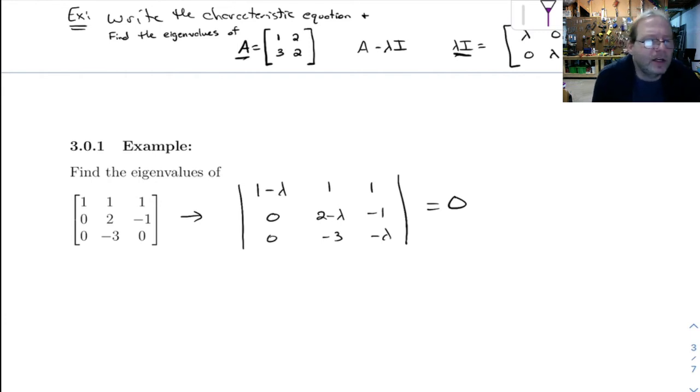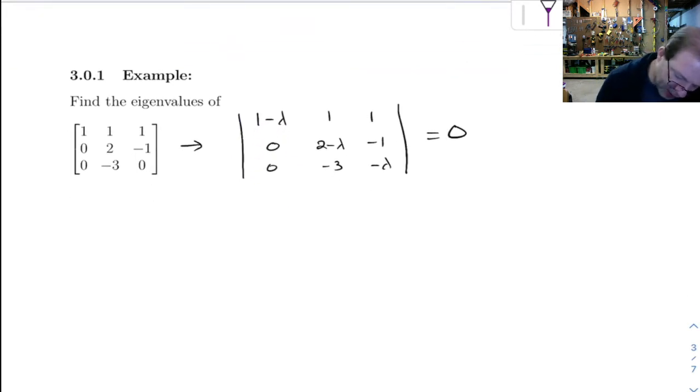All right. Taking the determinant here, we've got a couple of options. It's a 3 by 3, so we could use the thing where we copy these two on the other side. But I think cofactor expansion is going to be the way to go here because we've got this guy up here and two zeros. So let's do this with cofactor expansion.